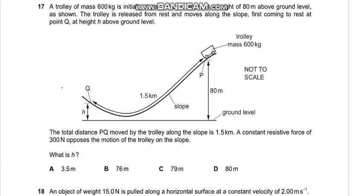Question number 17 says a trolley of mass 600 kg is initially at point P on a slope at a height of 80 meters above ground level. As shown, the trolley is released from rest, means that the initial speed at P is 0 and moves along the slope, first coming to rest at point Q.